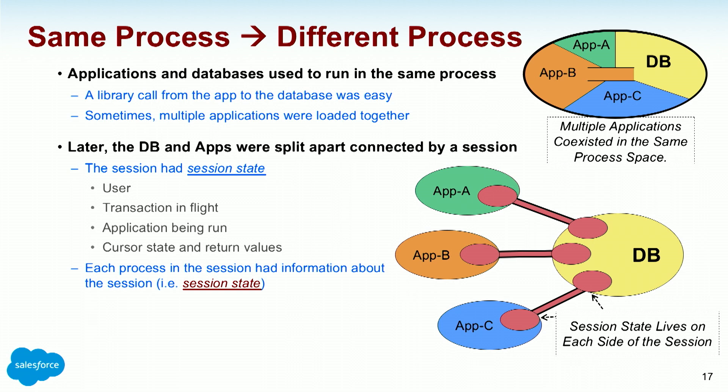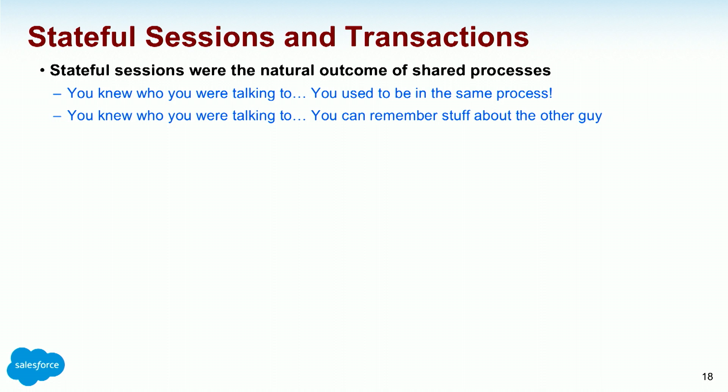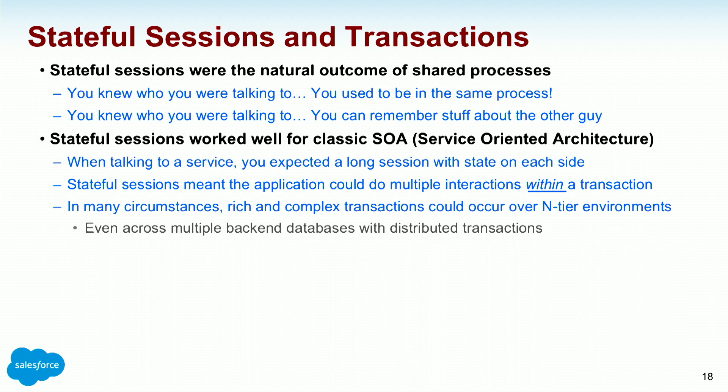Later, the app and the database moved to different servers — a two-tier or N-tier environment. Stateful sessions were the natural outcome of shared processes: you're going to talk to me again, we've got this session, I know you're in the middle of the transaction. They worked well for classic service-oriented architecture: a message comes in from a distrusted party into a trusted app server, which takes the message apart, decides whether to act on it, then does the work against the database. The database was surrounded by app protectors dealing with other things.